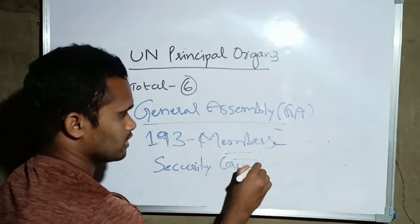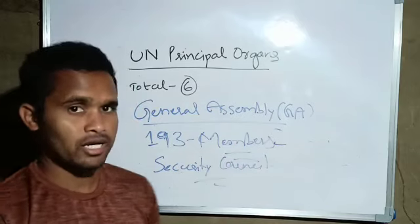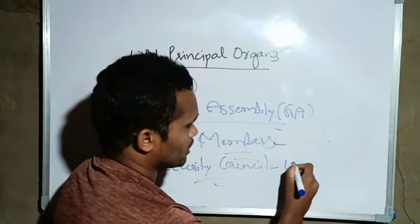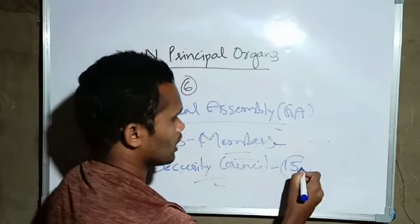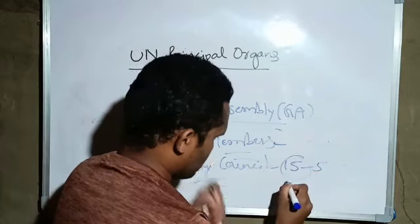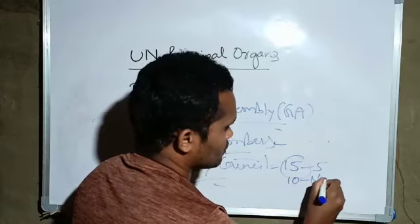Security Council - the members, the membership. 15 members total. 5 permanent members and 10 non-permanent members.